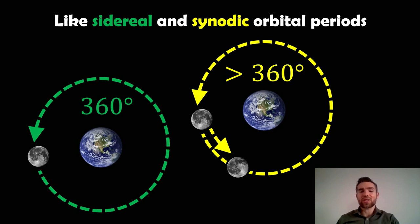And that's a little bit similar to like sidereal and synodic orbital periods. So here this relates to when you go round. So let's say, for example, I've got the moon here actually.